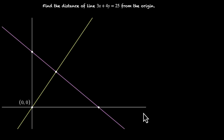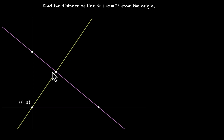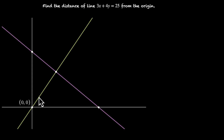Let's plot this. Here's our x-axis, y-axis, our line, and this is our origin. In this chapter, when we say distance, we mean perpendicular distance. This means we're not going to take any random point on this line and find its distance from the origin. We're only going to take one special point from which we can draw the perpendicular that passes through the origin. This length is what we're after — the distance between this line and the origin.